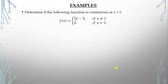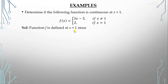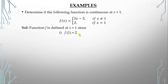Now let's take some examples. We have a function f(x) = 3x − 5 when x ≠ 1, and f(x) = 2 when x = 1. We need to check that this function is continuous at x = 1. First condition: f must be defined at x = 1. At x = 1, the function value is 2, so f(1) = 2 — we have a definite value, so the function is defined.